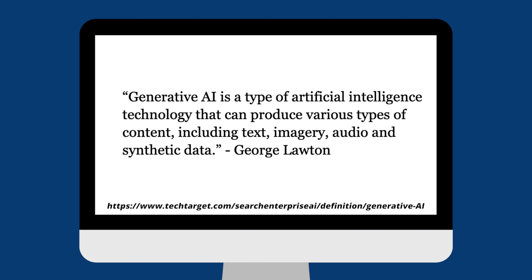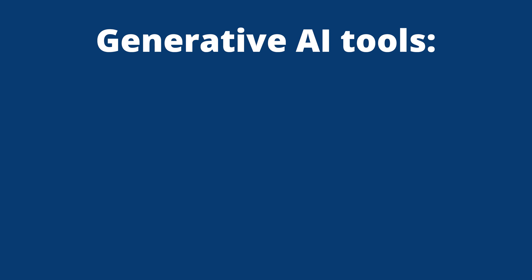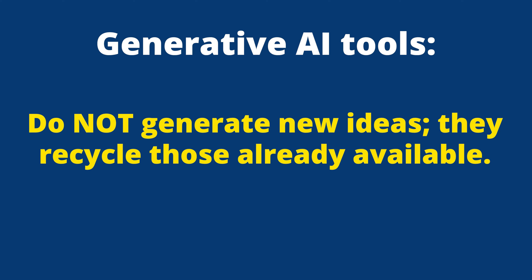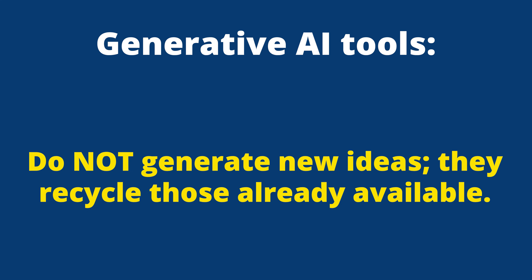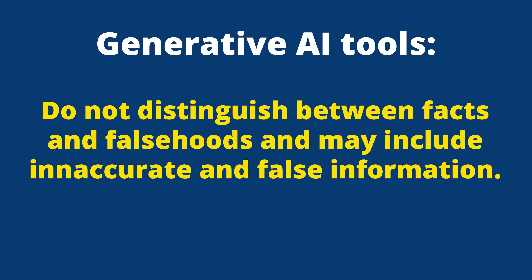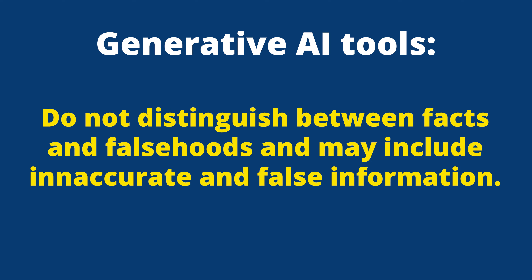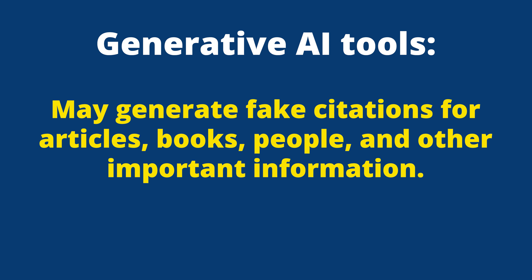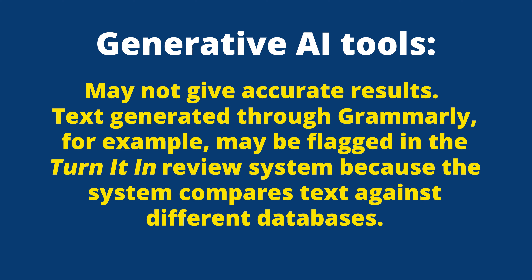You may be asking: what do generative AI tools actually do? George Lawton with TechTarget.com explains that generative AI is a type of artificial intelligence technology that can produce various types of content, including text, imagery, audio, and synthetic data. Generative AI tools do not use new ideas — they recycle those already available. They don't distinguish between facts and falsehoods and may include inaccurate and false information. They may generate fake citations for articles, books, people, and other important information, and they may not give accurate results.